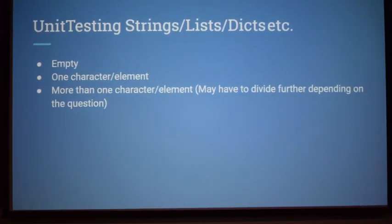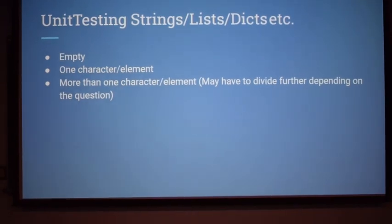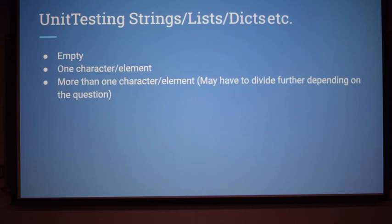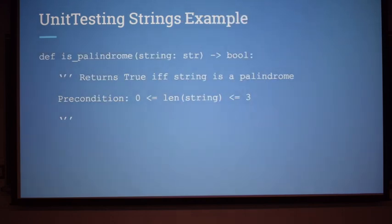Instead of integers, what if you had strings, lists, and dictionaries? When you think of test cases you usually think of integers or number lines, but for strings, lists, and dictionaries, you typically check: an empty input, a one-character or one-element input, and a more-than-one-character or item input. This can change depending on the question — you might have to check even and odd numbers of items. Let's look at an example: the is_palindrome function, which returns True if and only if the string is palindromic.